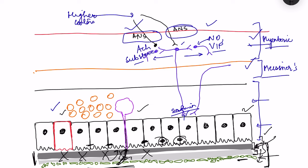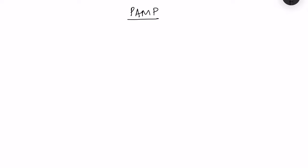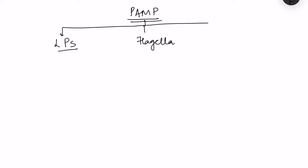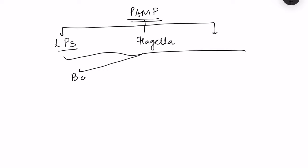When gut barrier permeability is compromised — as in chronic stress — the gut microbiome's pathogen-associated molecular patterns (PAMPs), such as lipopolysaccharides and bacterial flagella, are exposed to immune cells. These immune cells — including B cells, neutrophils, macrophages, dendritic cells, and other antigen-presenting cells — become activated and release pro-inflammatory cytokines including IL-1α, IL-1β, and TNF-α.